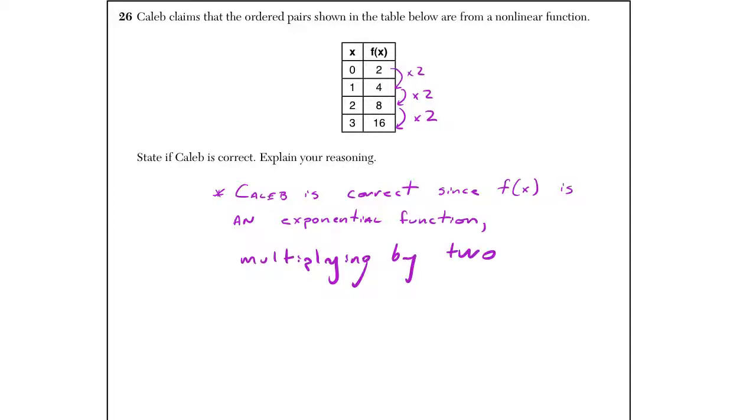So as always, I always say this with a kind of 50-50 question. Just saying, yeah, he's correct or no, he's incorrect and nothing else is a 0 out of 2. We're not awarded for kind of guessing here. Or maybe you don't know how to explain it. It doesn't matter if it's correct. It's more so the explanation here. So just looking at the table, we see it's a pattern of multiplying by 2 times 2 times 2 times 2. So is Caleb correct that this was nonlinear? Yes.